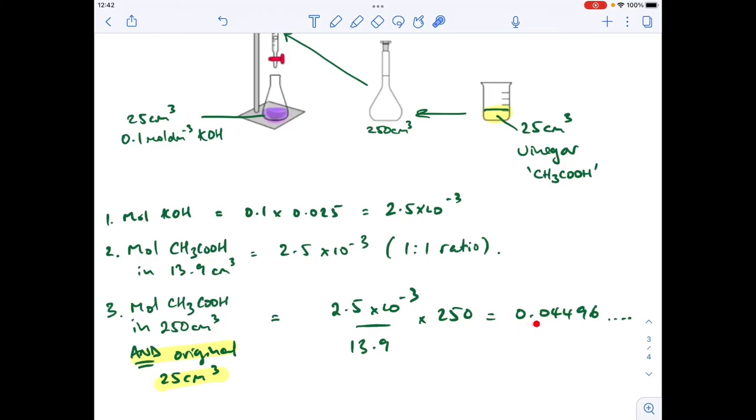That's coming out at 0.04496 dot dot dot. I'm just keeping the number in the calculator there, but the important thing, just to make this point again, that's how many moles are in this original 25 cm cubed of vinegar.